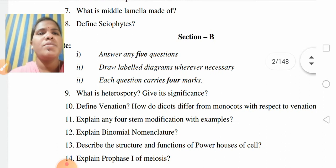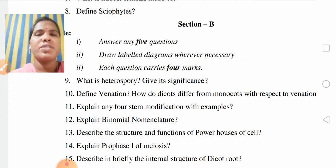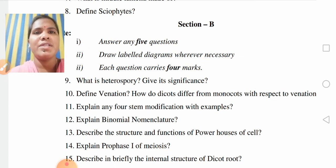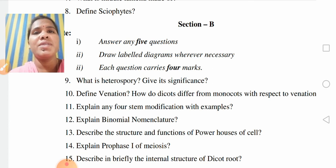Next, coming to Section B, this section will choose answer any 5 questions. Draw labeled diagrams wherever necessary. Each question carries 4 marks. So 5 into 4 marks is 20.